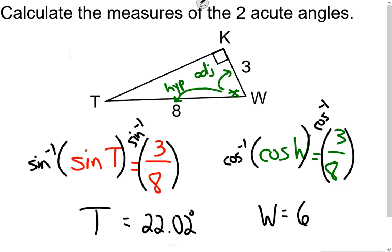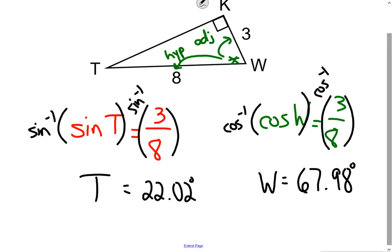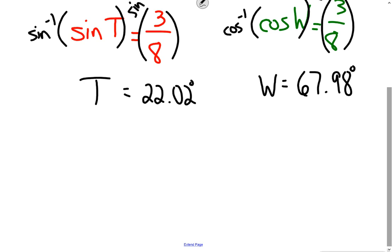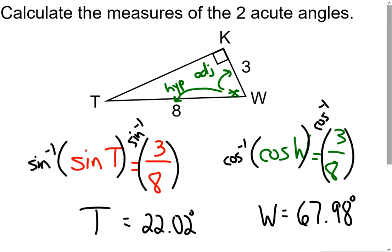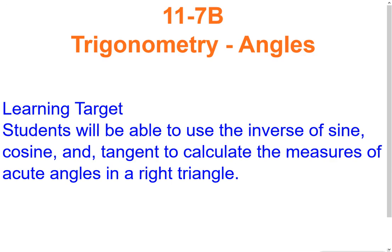Let's verify this makes sense. The sum of angles in a triangle must equal 180 degrees. We have the 90-degree angle, plus 22.02 degrees, plus 67.98 degrees. Adding those three numbers gives exactly 180 degrees, confirming our answers are correct. By using the inverse of sine, cosine, and tangent, we found the missing angles — and that concludes our lesson on calculating angles using trigonometry.